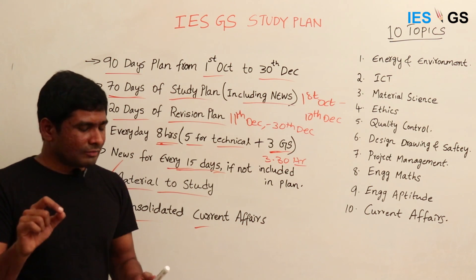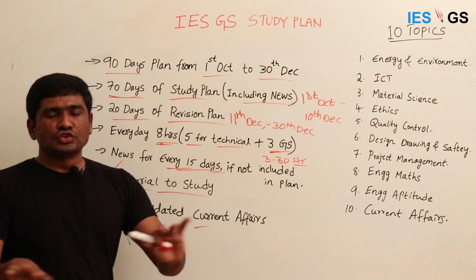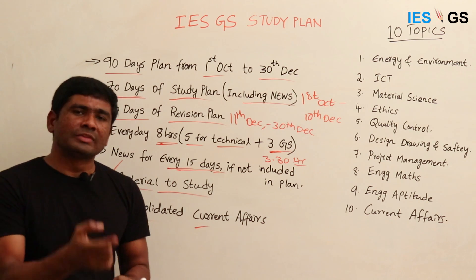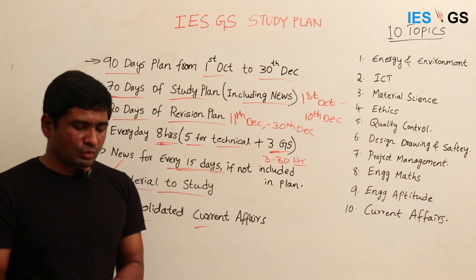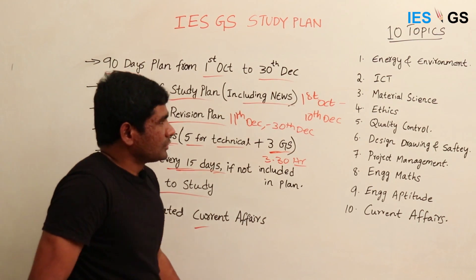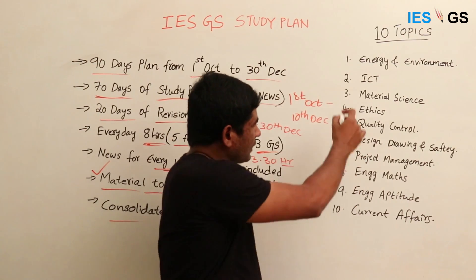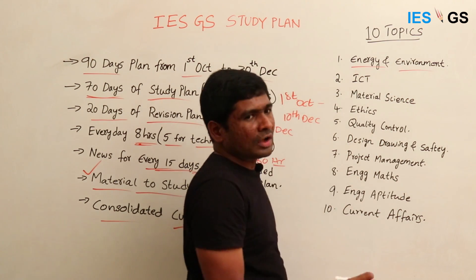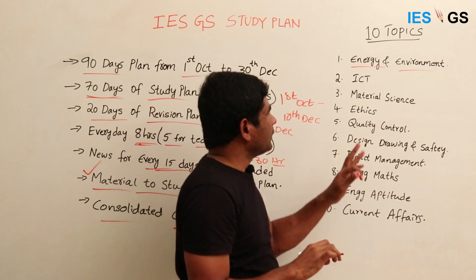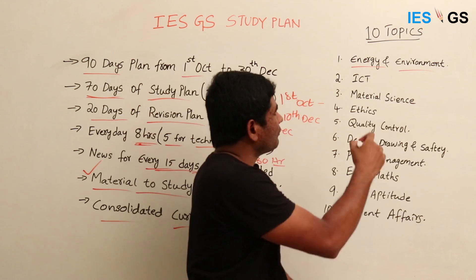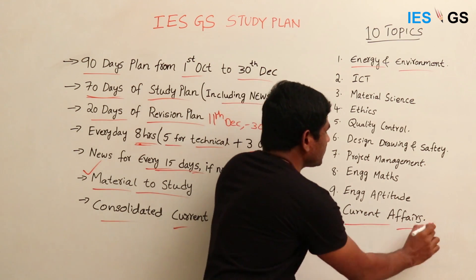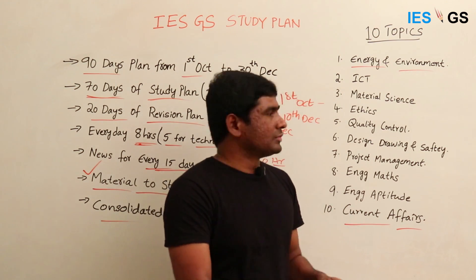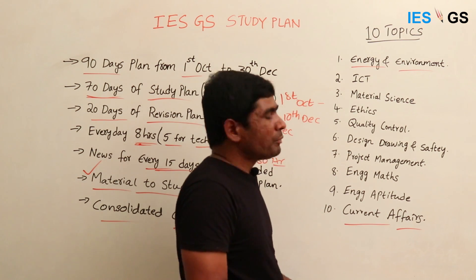In December we will release a final consolidated current affairs document covering all relevant topics, weeding out unnecessary issues to reduce burden on candidates, and also covering important concepts from June and July. For topics like energy and environment, we cover all basic concepts first, while current happenings are addressed through the current affairs section, which you can review daily or every 15 days.